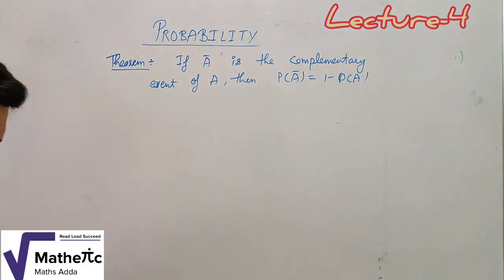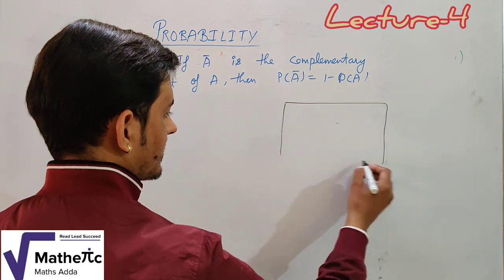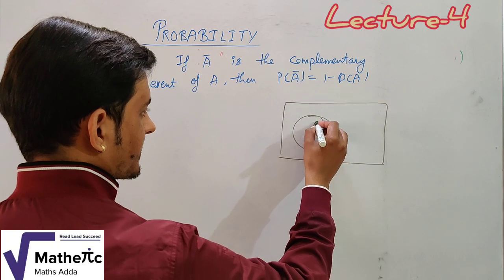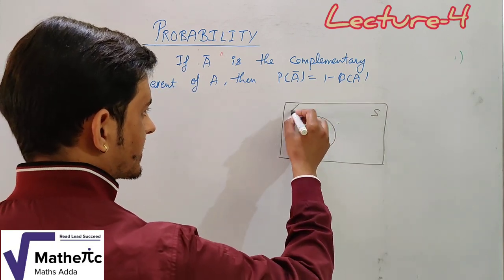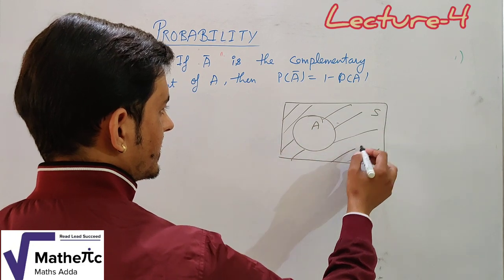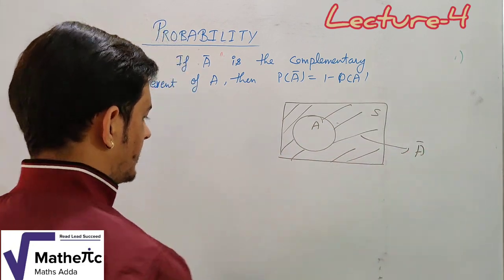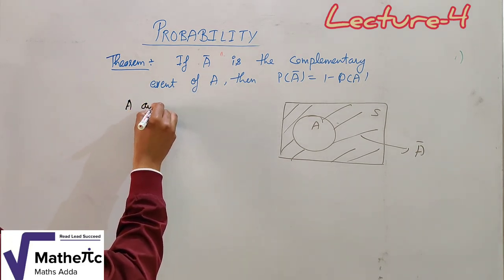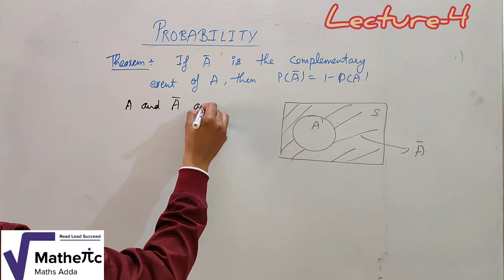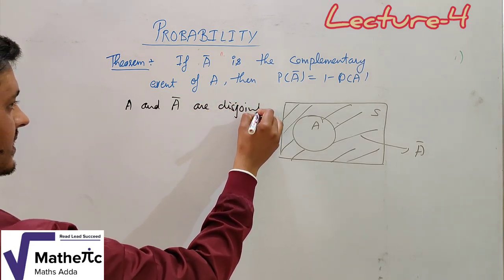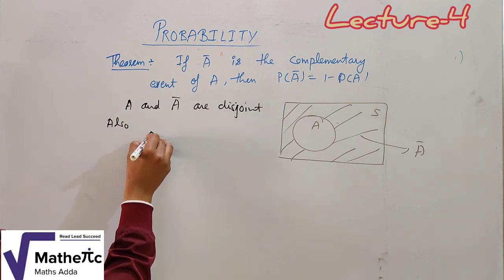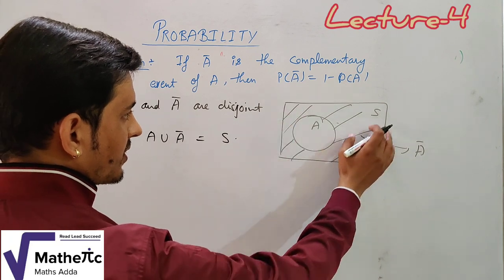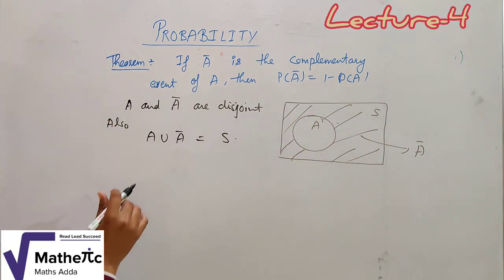Let us prove this result. We take the sample space S. The events A and A-bar together form S, so A union A-bar equals S. Also, A and A-bar are disjoint — they have no common elements. Since A and A-bar are mutually exclusive and their union is S, by the axioms we can apply the addition rule for probabilities.